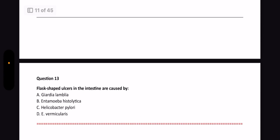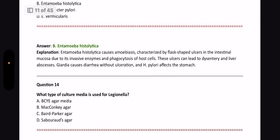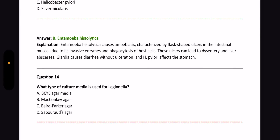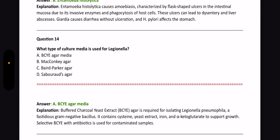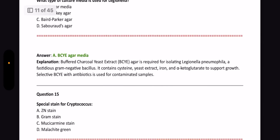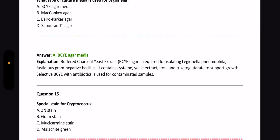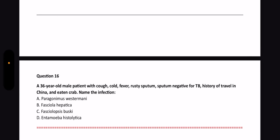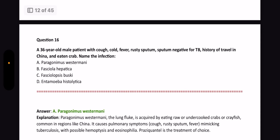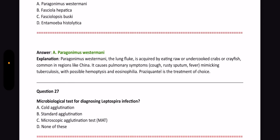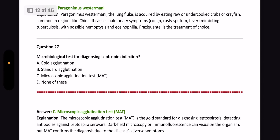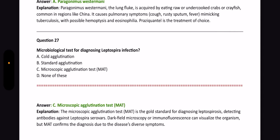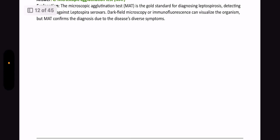Next question: Flower-shaped ulcers in the intestine are caused by? The answer is Entamoeba histolytica. Next question: Which culture media is used for Legionella? Culture media is an important PYQ topic — the answer is BCYE agar. Next: Special stain for Cryptococcus? Stains are an important topic — the answer is Mucicarmine stain. Next question: A 36-year-old male with cough, cold, fever, rusty sputum, sputum negative for TB, history of travel to China and eating crab — name the infection. The answer is Paragonimus westermani. Next question: Microbiological test for diagnosing Leptospira infection? The answer is Microscopic Agglutination Test. Different tests for different organisms are very important and keep repeating.